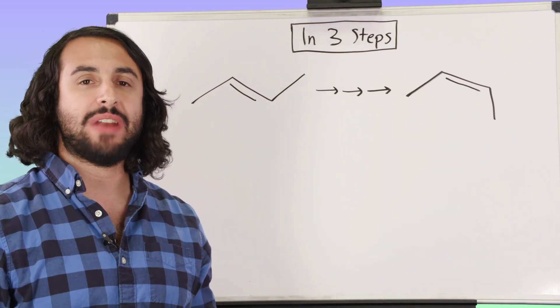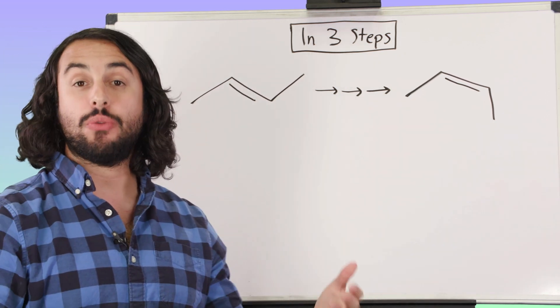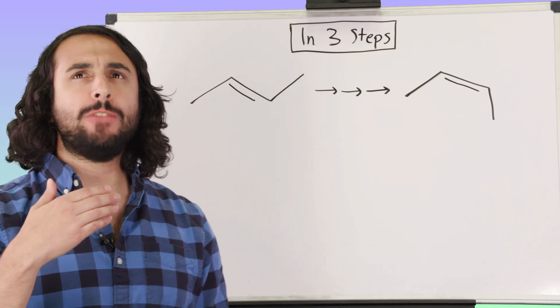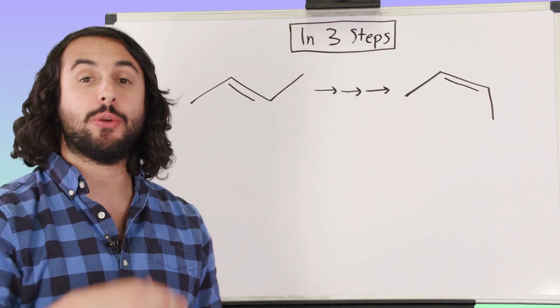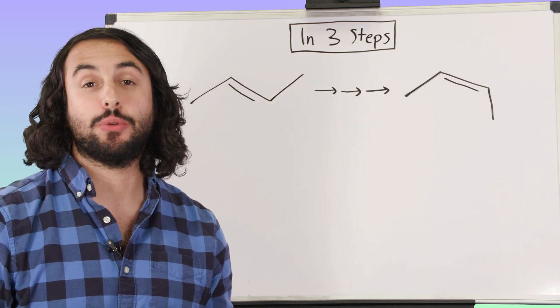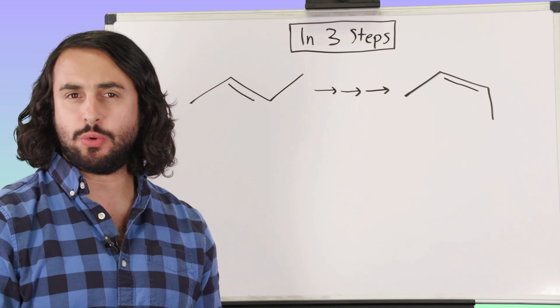Now we're left with the task of how do we get to an alkyne so that we can do that. What methods do I know to get an alkyne? We know that we can generate pi bonds through elimination reactions, but we would need to do two of them.